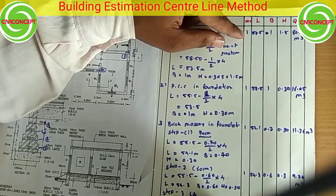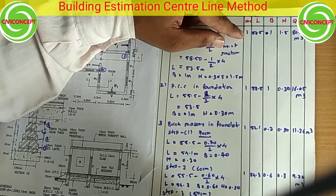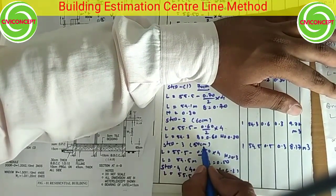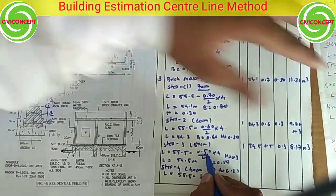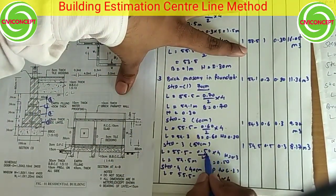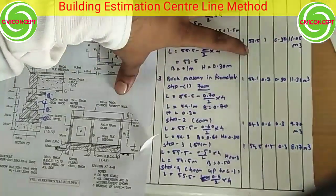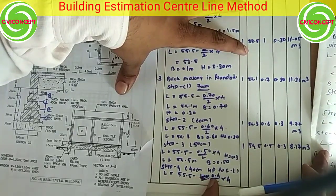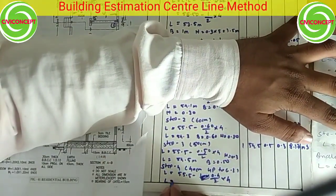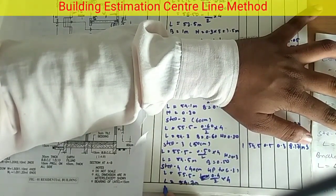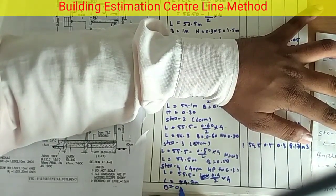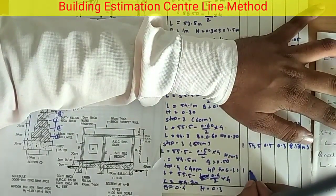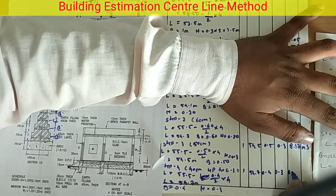Step 3 has a width of 50 centimeters (0.5 m). Center line = 55.5 − (0.5 ÷ 2) × 4 = 54.5 meters. Step 4 has a width of 40 centimeters (0.4 m). Length = 55.5 − (0.4 ÷ 2) × 4 = 54.7 meters, height = 0.3 m. Quantity for step 4 = 54.7 × 0.4 × 0.3 = 6.56 cubic meters.